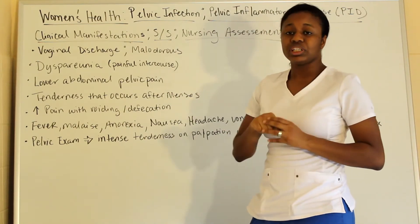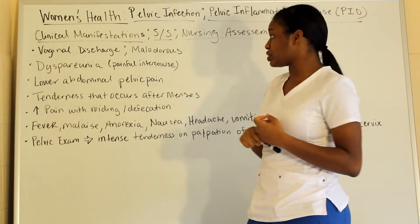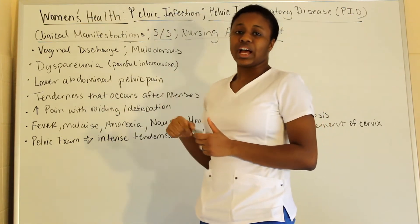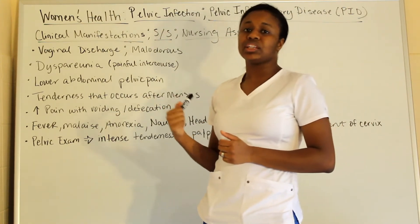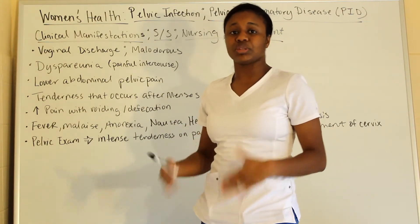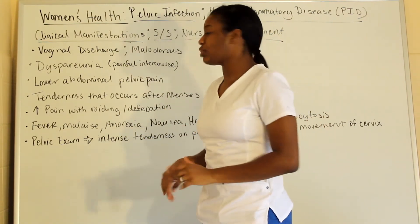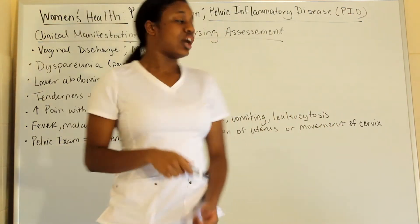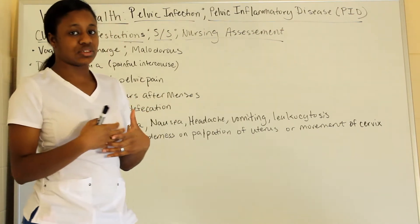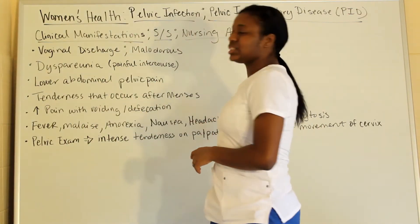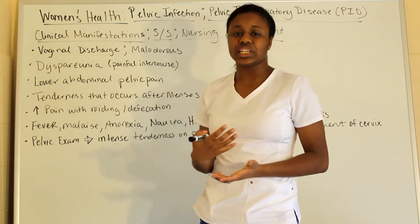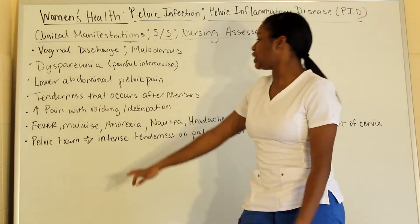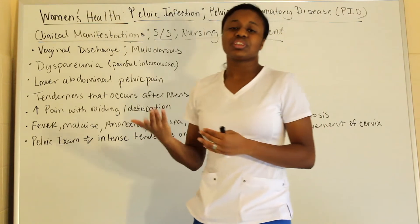Signs and symptoms include malodorous vaginal discharge, dyspareunia (painful intercourse), lower abdominal and pelvic pain, and tenderness that may occur after menses. There may also be increased pain on voiding (urinating) or defecation, as well as fever, malaise, anorexia, nausea, vomiting, and leukocytosis.